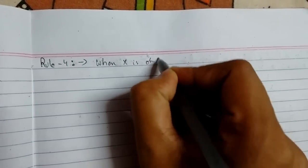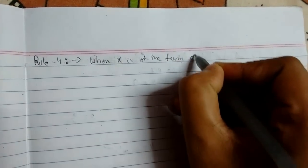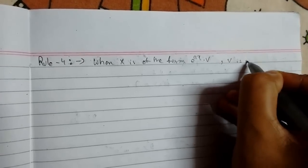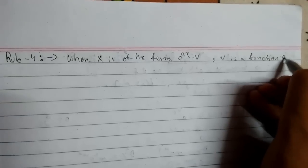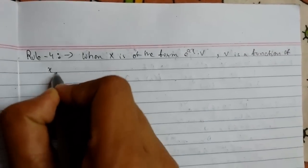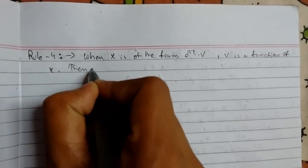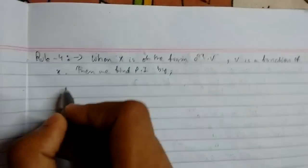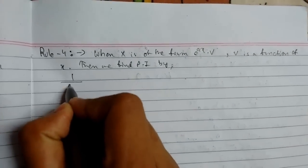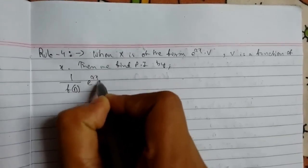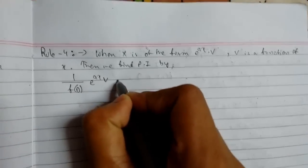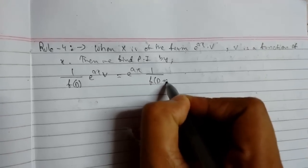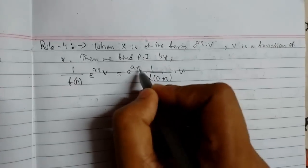When x is of the form e^(ax) times v, where v is a function of x, then we find PI by the following rule: 1/f(D) · e^(ax) · v equals e^(ax) · 1/f(D+a) · v. This is the a.